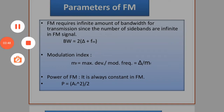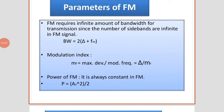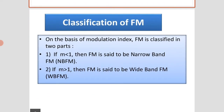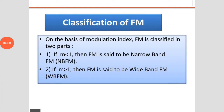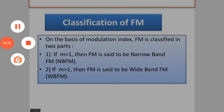The power of FM is always constant. P = AC² / 2. The classification of FM: on the basis of modulation index, FM is classified into two parts. If M is less than 1, then FM is said to be narrow band FM, also called NBFM. If the modulation index M is greater than 1, then FM is said to be wide band FM, also called WBFM.